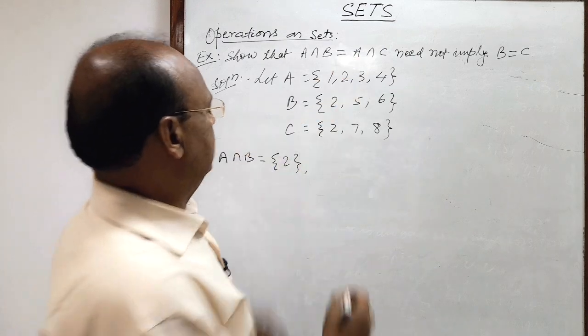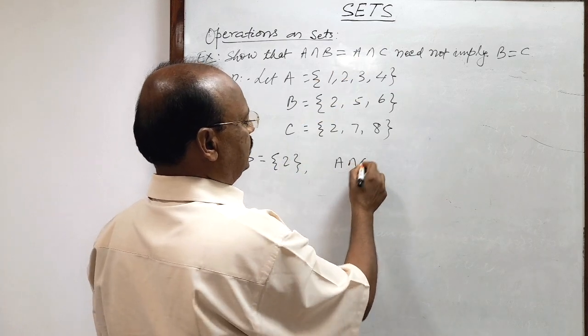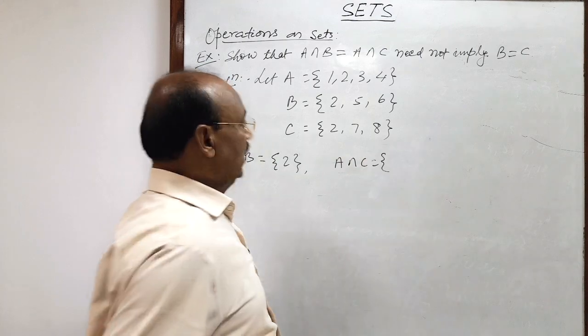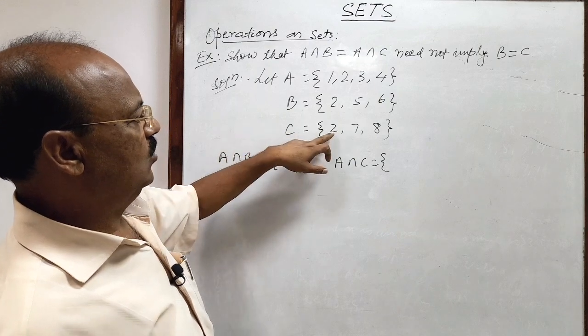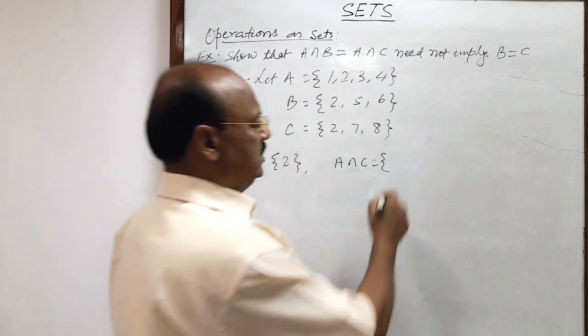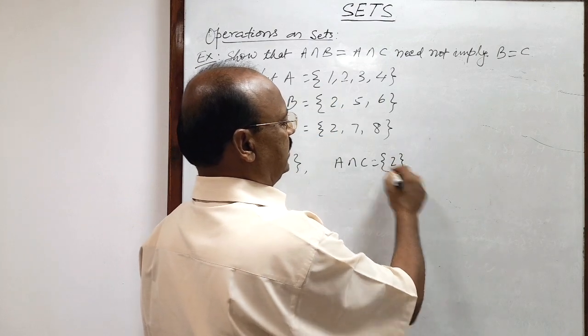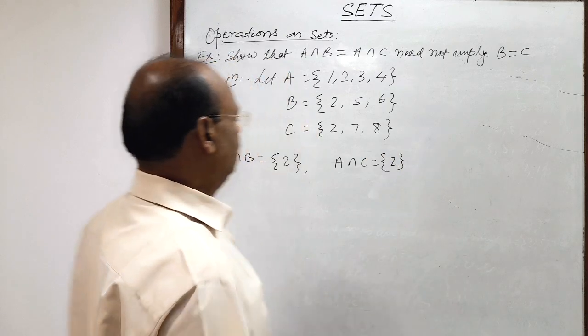And A intersection C is how much? Here we have to collect common elements in these two sets A and C. Again here common element is 2. So this set is also having single element 2. So what we are observing here?